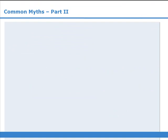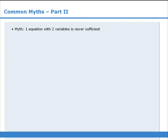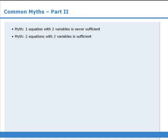To summarize, in this lesson we examined two common myths. The first myth is that one equation with two variables never provides sufficient information in a data sufficiency question. The second myth says that having two equations with two variables will always provide sufficient information to determine the individual values of x and y. While both of these myths can apply to several situations, they do not always apply, so watch out for the traps we looked at in this lesson.